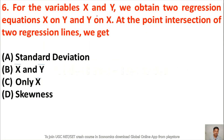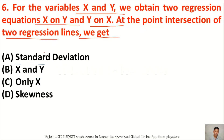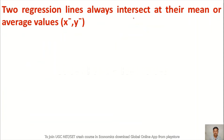Question 6: For variables x and y, we obtain two regression equations — x on y and y on x. At the point of intersection of two regression lines, we get — option A standard deviation, option B x-bar and y-bar, option C only x-bar, option D skewness. The answer is option B, x-bar and y-bar. Two regression lines always intersect at their mean or average values, i.e., x-bar and y-bar.